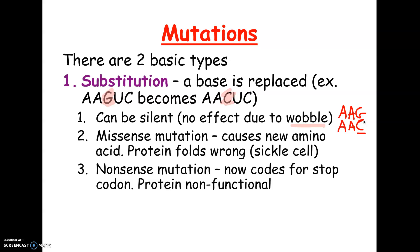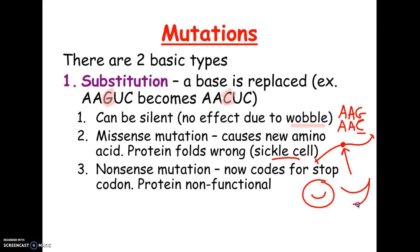A second possibility is what's called a missense mutation, where the change does code for a different amino acid. Every other amino acid in the protein is correct, but that one amino acid is incorrect. A good example is how the mutation for sickle cell came about — one letter of the DNA code is incorrect in the hemoglobin gene. When the protein is made, one amino acid is wrong, and it has very different properties than the correct one. So instead of the red blood cell folding into a nice circular shape, it collapses and forms a sickle shape — that's sickle cell anemia.